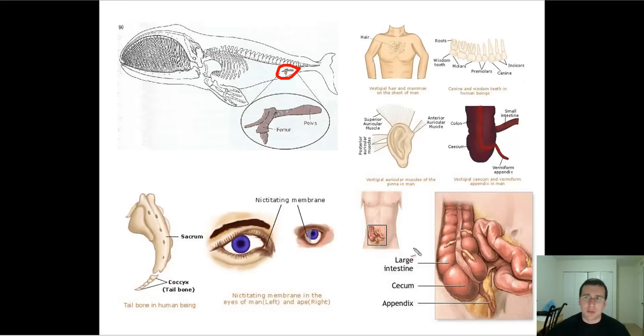All of these are examples of structures which no longer fulfill a function. Now some of them may still have some sort of residual function. Some scientists are indicating the appendix, for example, may still have some sort of residual function in helping digestion somehow. But it is really a remnant.